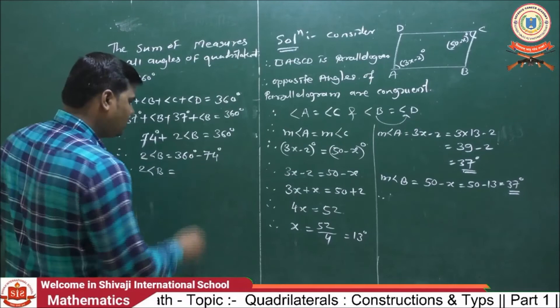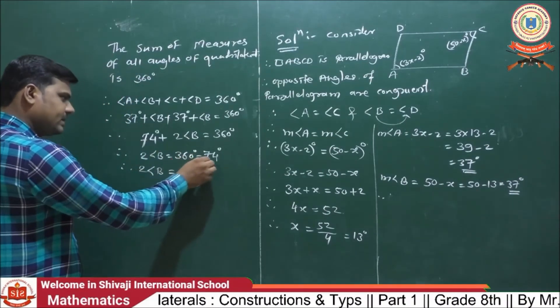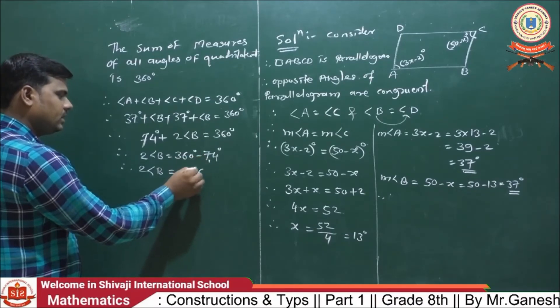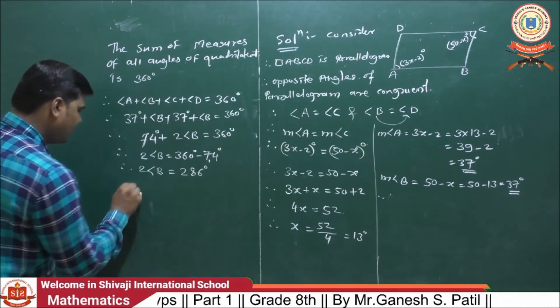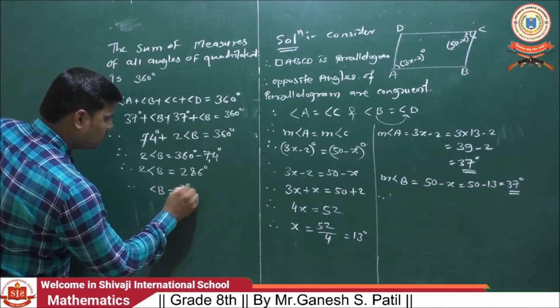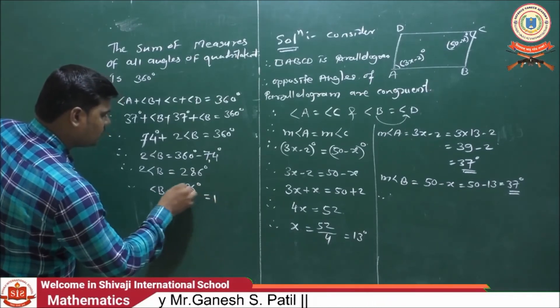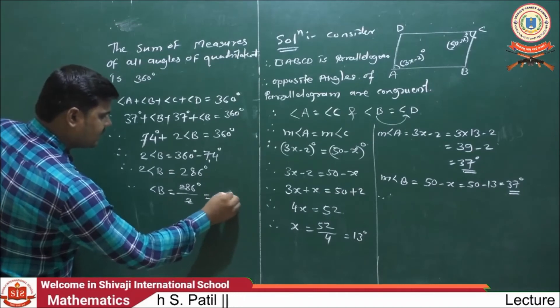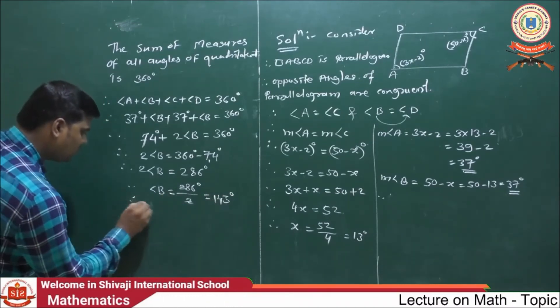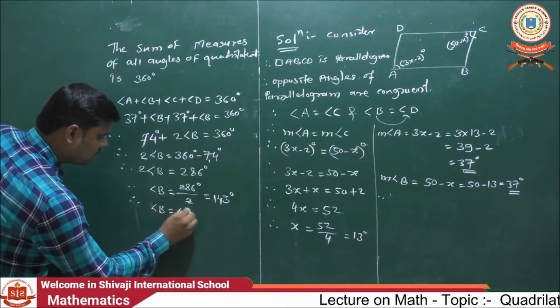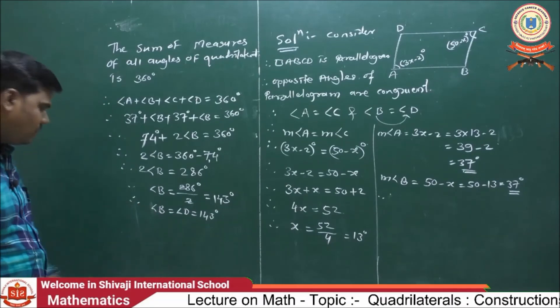You just do this subtraction. 0 minus 4, 6. Then, carry one here. 16 minus 8, 8. And 2 minus 3 minus 1, 2. 286 degrees. Then, B is equals to 286 upon 2. The value of B is equals to 143. Then, value of D is also equals to 143.